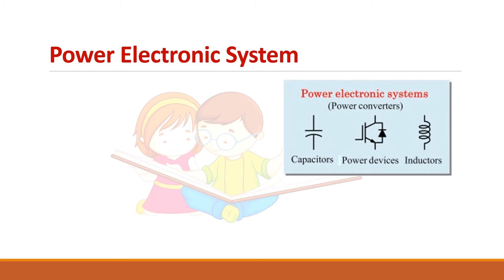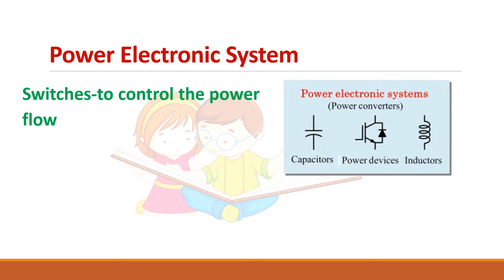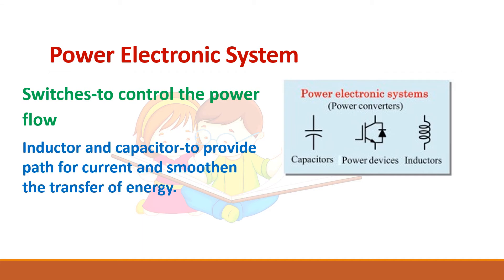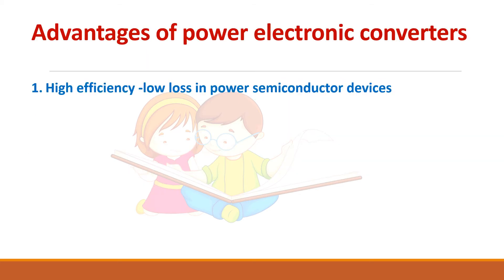In the power circuit, power electronic systems are used to control the power flow from source to load. Energy storage elements — inductors and capacitors — are used to limit the rate of change of current and rate of change of voltage, thereby providing a path for the current and smoothing the transfer of energy.